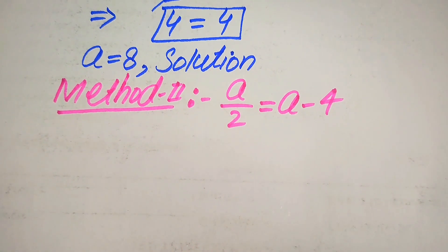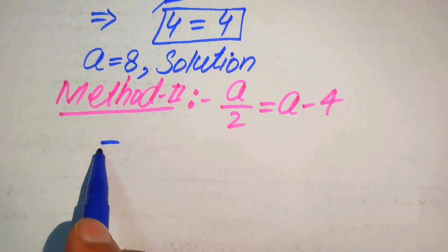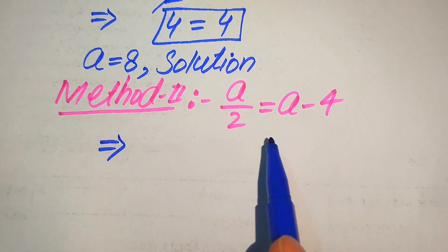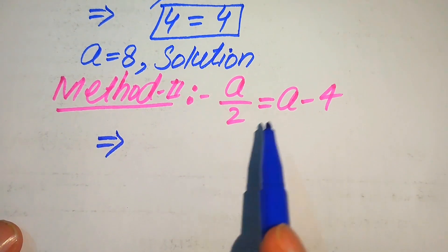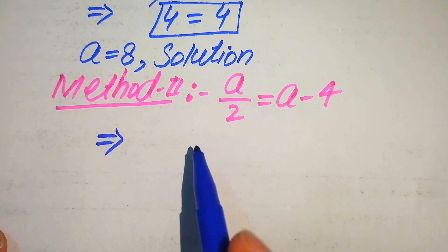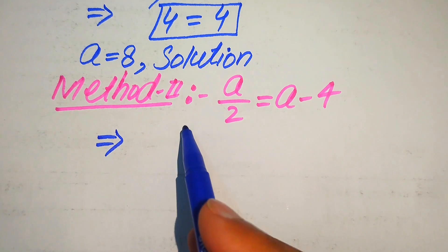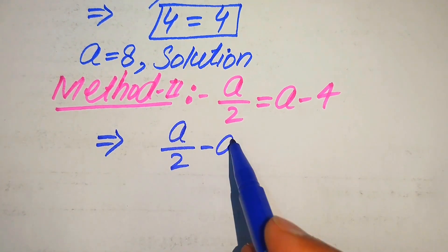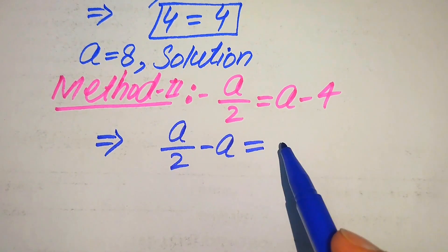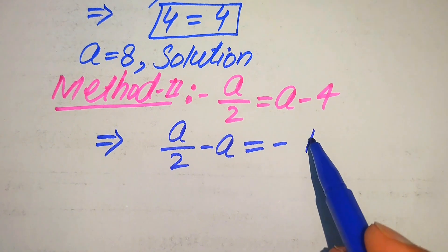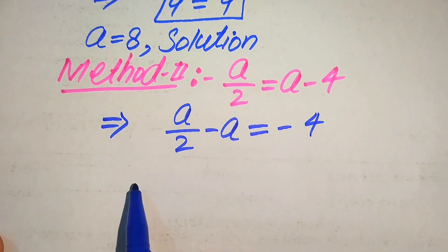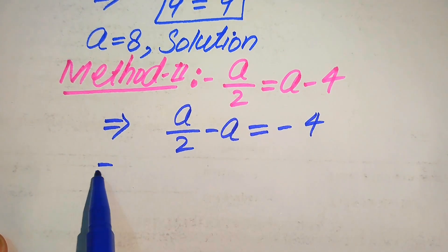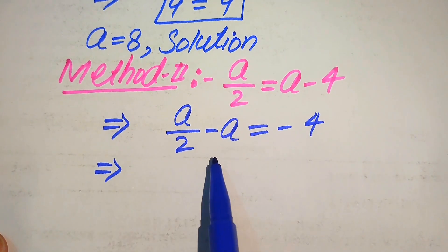In the second method we move all variable terms to the left-hand side. We move this a to the left-hand side — since it is positive a, moving it makes it negative — and we get a over 2 minus a is equals to minus 4.